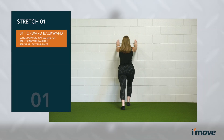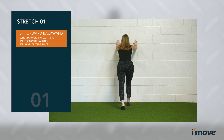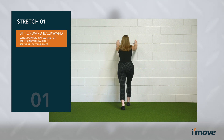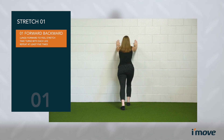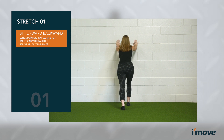What I want you to do here is stand really tall through your upper body, and then you're going to lunge gently forward until you feel a stretch in the calf of that back leg. Move forward at least five repetitions, holding that stretch for just a few seconds each time.